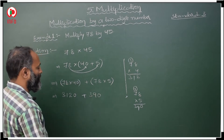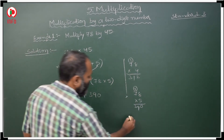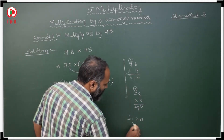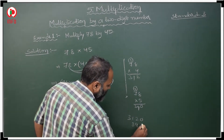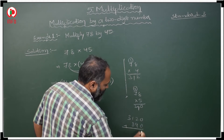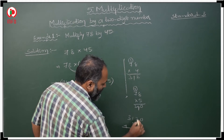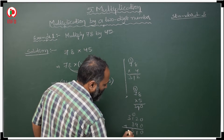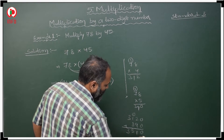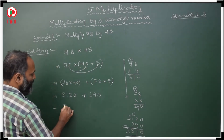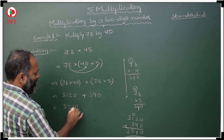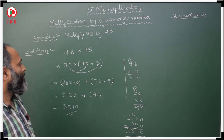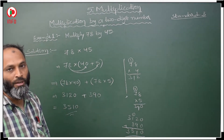Now we have to add both: 3120 and 390. Add 0, 9, then carry: 3 plus 1 is 4, 4 plus 1 is 5, and 3. Answer is 3510. This is our answer by using distributive property.